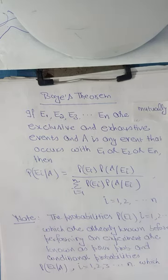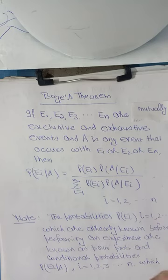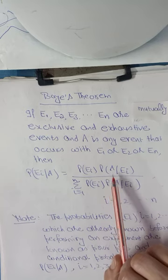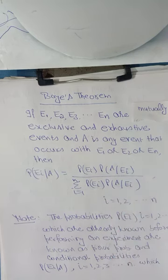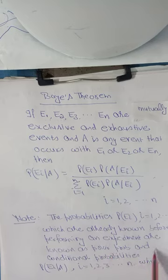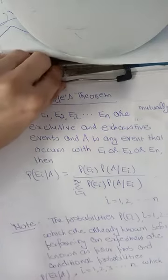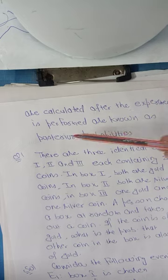Probability of Ei given A is the conditional probability we have to find — the probability of event E1 when A has already occurred. The probabilities of E1 which are already known before performing an experiment are known as prior probabilities, and the conditional probabilities calculated after the experiment is performed are known as posterior probabilities.